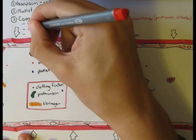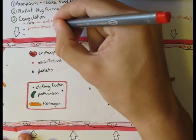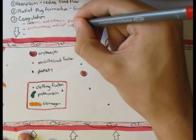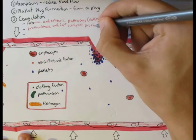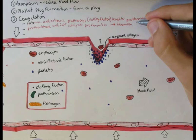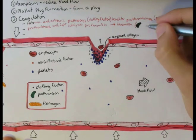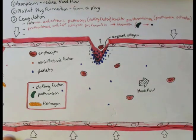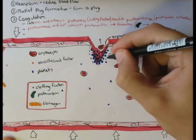The second step, which is common to both these pathways, intrinsic and extrinsic, is where the substance prothrombin activator or prothrombinase, together with calcium ions, actually catalyzes prothrombin, this green stuff, into thrombin. So here we have prothrombin catalyzed into thrombin, which I'll denote with just a green dot.